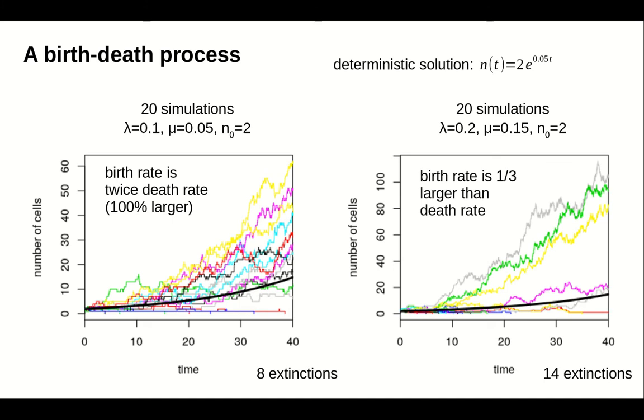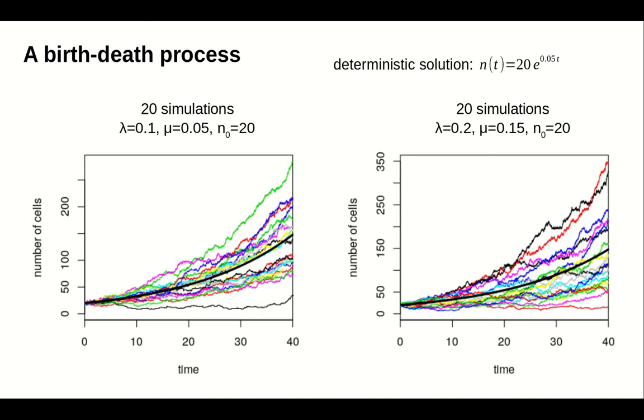If we increase the initial condition to 20 cells, we see that the variability in the stochastic solutions is reduced. We no longer see any extinction events, as, for these parameters, we are unlikely to ever get 20 more deaths than births.